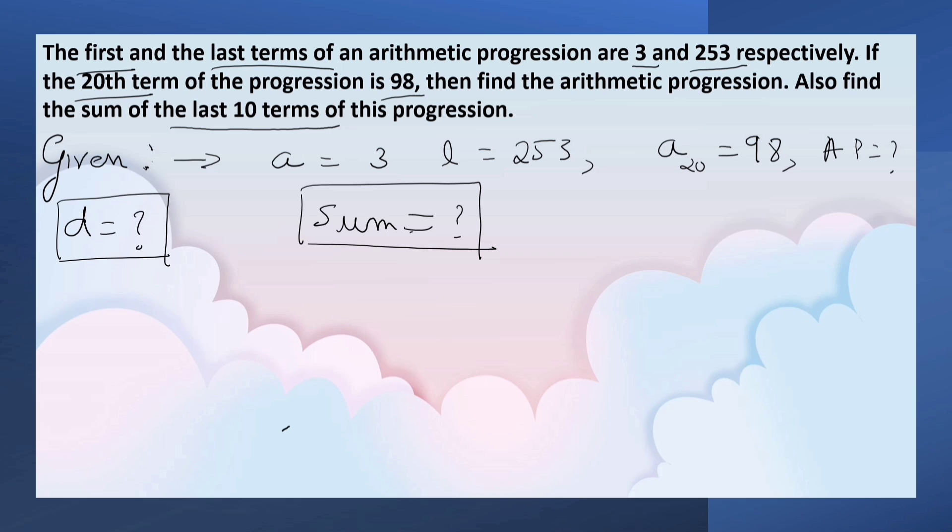We can find the common difference by using the formula AN equals A plus N minus 1 times D. Here the Nth term is 98. Now let's substitute the values. First term is 3, N is 20, minus 1, times D which we have to find out.